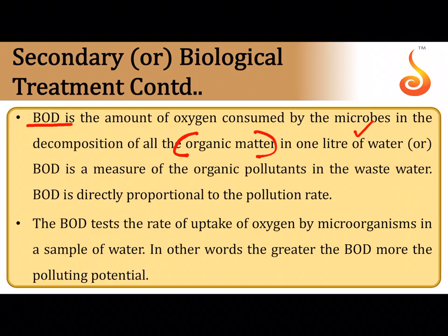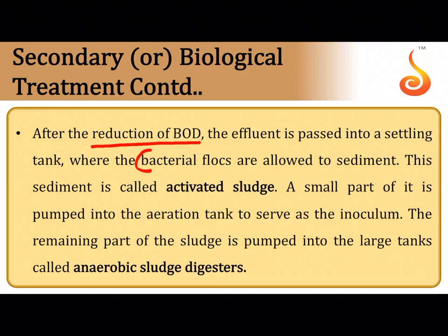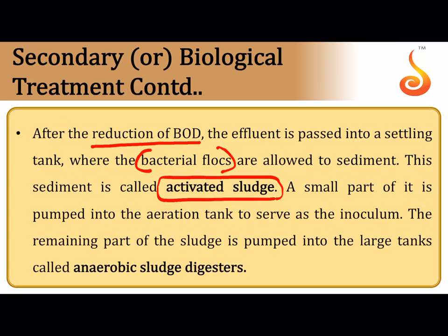Secondary or biological treatment continues until the biochemical oxygen demand comes down — the main purpose is to lower the BOD. The lower the BOD of a water sample, the lesser the pollution or organic matter load. After BOD is reduced, the contents are allowed to settle in a settling tank. The settled tangled masses of fungal hyphae and bacteria — the flocs — form what is called activated sludge. A small amount of this activated sludge is put back into the secondary treatment to maintain aerobic microbial populations for efficient decomposition.